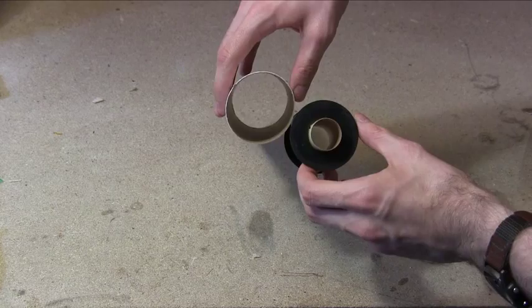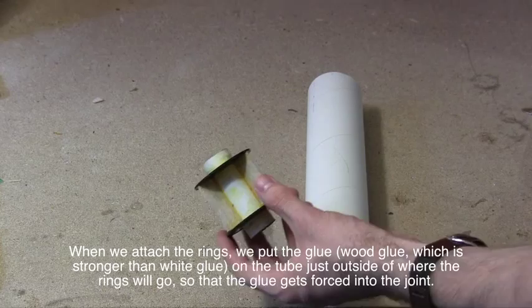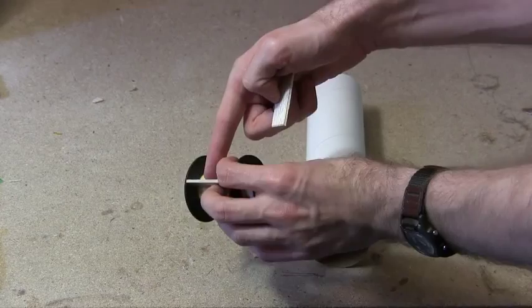To make the mount stronger, we cut and glue in these pieces of balsa that fit between the centering rings and the motor tube. To make the mount stronger still, we apply beads of glue, called fillets, to each of the corners.